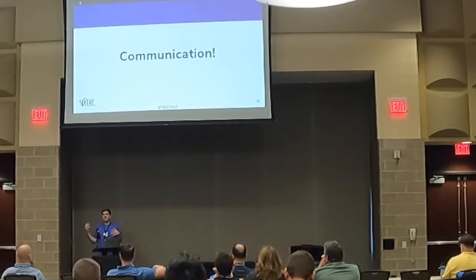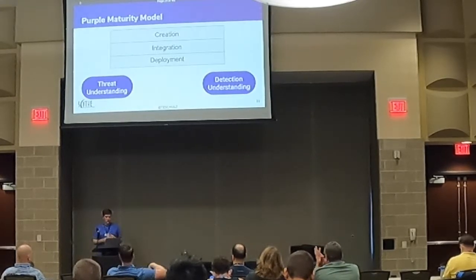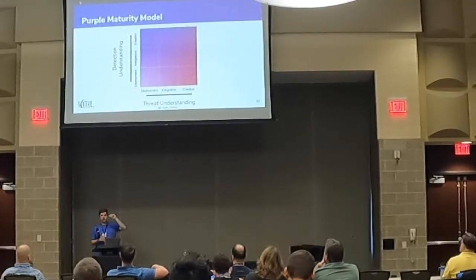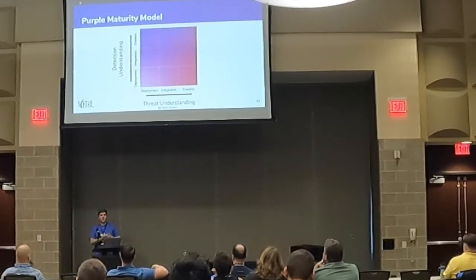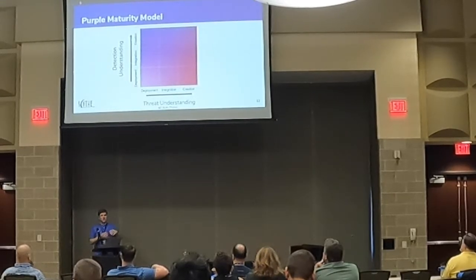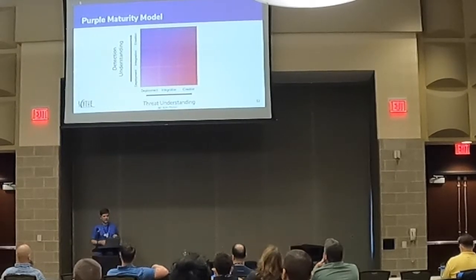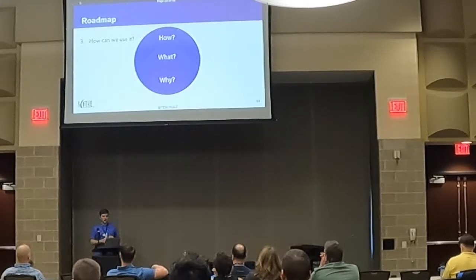All of this comes down to communication. The teams need to work together — you have your threat understanding, you have your detection understanding, but everybody still needs to be working together. That is the point of an effective purple team. I've got a nine-block quad chart here that essentially allows us to chart our path through the maturity model. That's going to be really important when you're trying to develop a roadmap — how do we move a team that has been focused on deployment to integration, and then to creation?